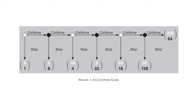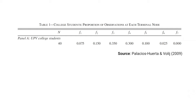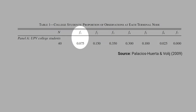Conventional economic theory assumes that people are rational maximizers, and predicts that nobody will play continue. But when behavioral economists run field experiments, they find that most students continued the game. In the first node, only 7.5% of students stopped; in the second node, only 15%; and in the third node, 35% stopped.